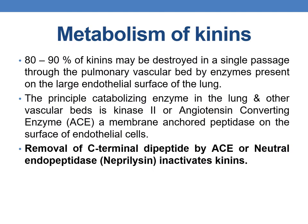80–90% of kinins may be destroyed in a single passage through the pulmonary vascular bed, as they are rapidly degraded primarily in the lungs by enzymes present on the large endothelial surface. The principal catabolizing enzyme in the lungs and other vascular beds is kininase 2, or angiotensin converting enzyme (ACE). It is a membrane-anchored peptidase on the surface of endothelial cells. Additionally, another enzyme — neutral endopeptidase, also called neprilysin — can also inactivate kinins. Removal of the C-terminal dipeptide by ACE or neutral endopeptidase inactivates the kinin.